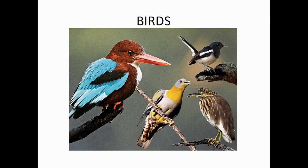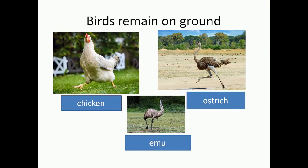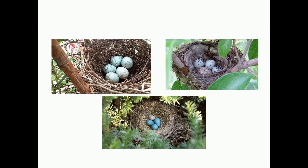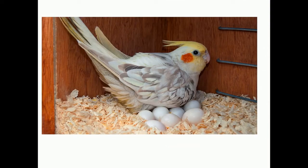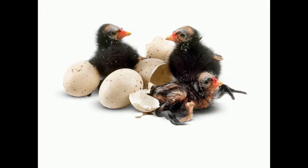First, we shall study the birds. You must have seen birds in our garden or even in your home. Most birds can fly, but some birds don't fly and remain on the ground, such as chicken, ostrich, emu, etc. All birds lay eggs. Most birds build their nest and lay their eggs in it. When the egg is laid, the female bird sits on the eggs and keeps them warm, because by keeping the egg warm, the baby starts to develop inside. When it is fully developed, it hatches from the egg and the baby bird comes out. This process of sitting on the egg to keep it warm in order to hatch the baby is called incubation.